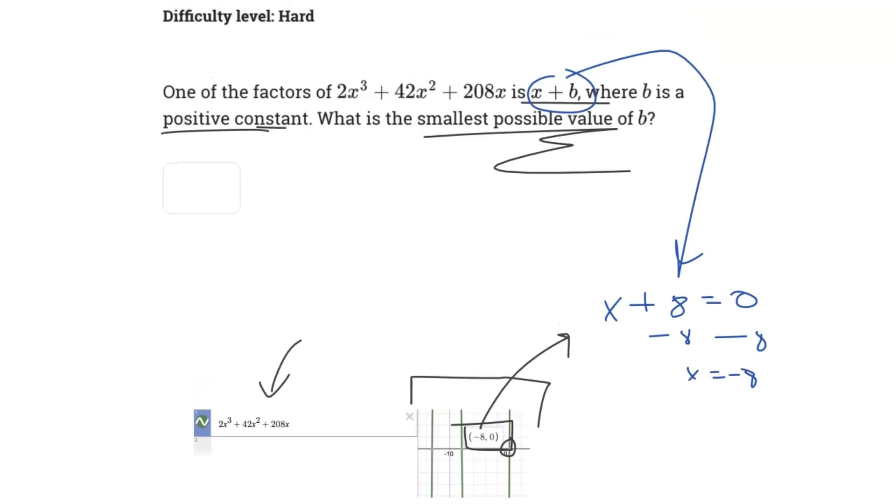The long way to solve this is just to factor it out, right? Factor out 2x, and then you would factor out x squared plus 21x plus 104, which gives you x plus 8, x plus 13.